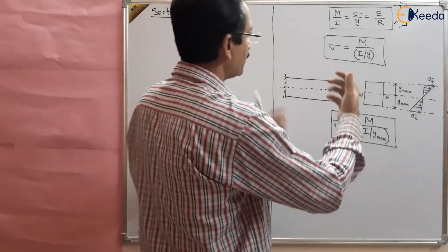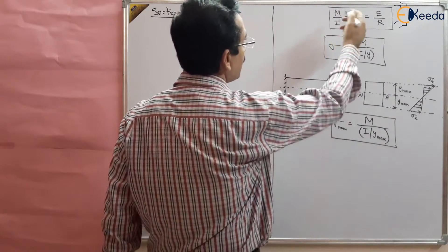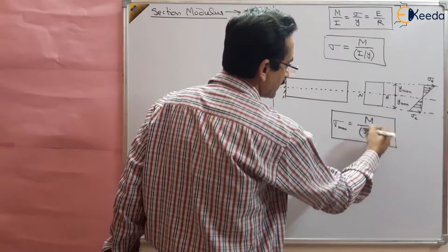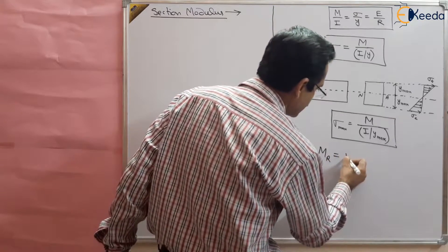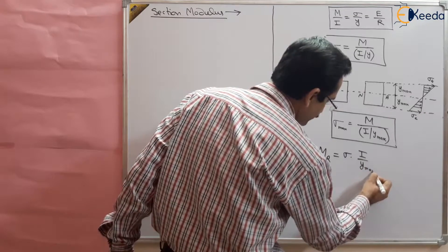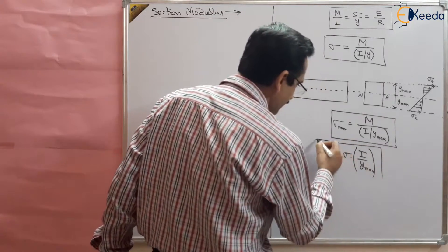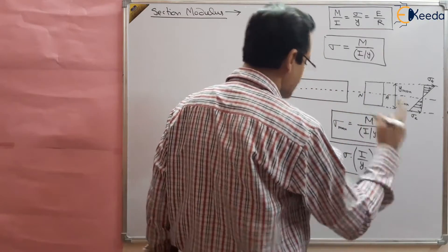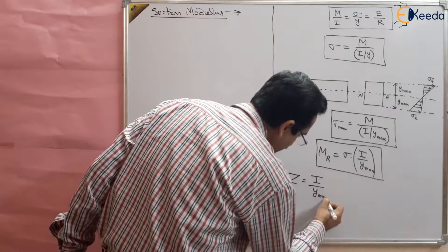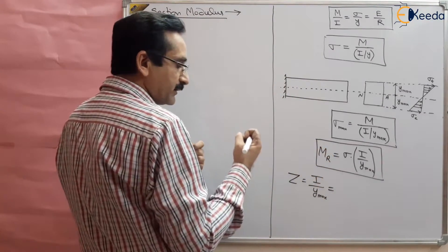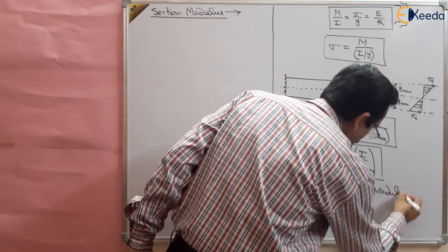In another sense, we can write the moment of resistance of the beam. Moment of resistance MR is equal to sigma multiplied by I by y_max. Again, if this quantity is higher, the moment of resistance will be higher. So this quantity I by y_max is called the section modulus, denoted Z, where Z equals I by y_max. This is very important because it shows the strength and rigidity of the material.